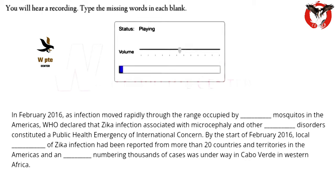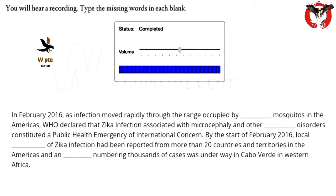In February 2016, as infection moved rapidly through the range occupied by Aedes mosquitoes in the Americas, the WHO declared that Zika infection associated with microcephaly and other neurological disorders constituted a public health emergency of international concern. By the start of February 2016, local transmission of Zika infection had been reported from more than 20 countries and territories in the Americas, and an outbreak numbering thousands of cases was underway in Cabo Verde in western Africa.